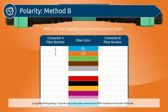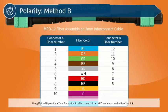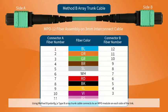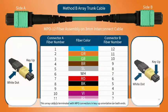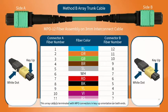Using method B polarity, a type B array trunk cable connects to an MPO module on each side of the link. This array cable is terminated with MPO connectors in key-up orientation on both ends.